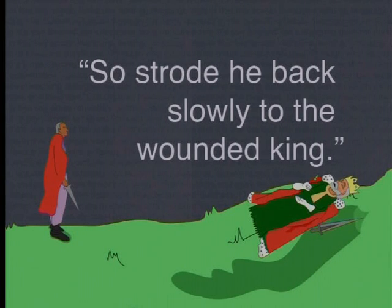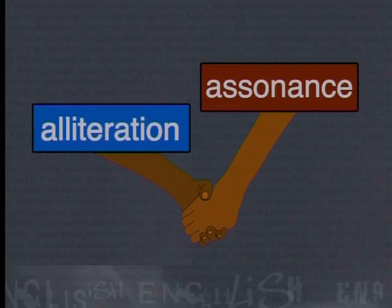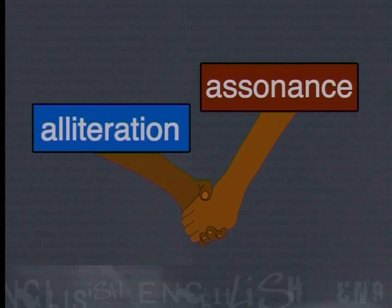It is important to remember that alliteration and assonance are examples of figurative language. When commenting on a writer's use of figures of speech you must be able to justify why you think it is effective in context. Alliteration and assonance are related — they work in the same way. The only difference is that assonance is the repetition of vowel sounds whereas alliteration is the repetition of consonant sounds. They are equally important in conveying a writer's intention.